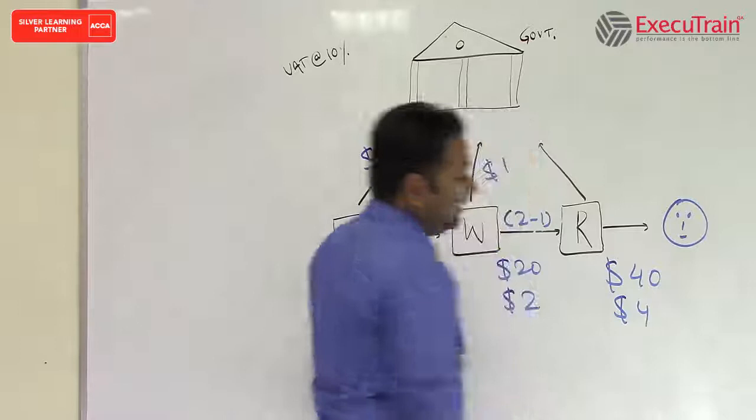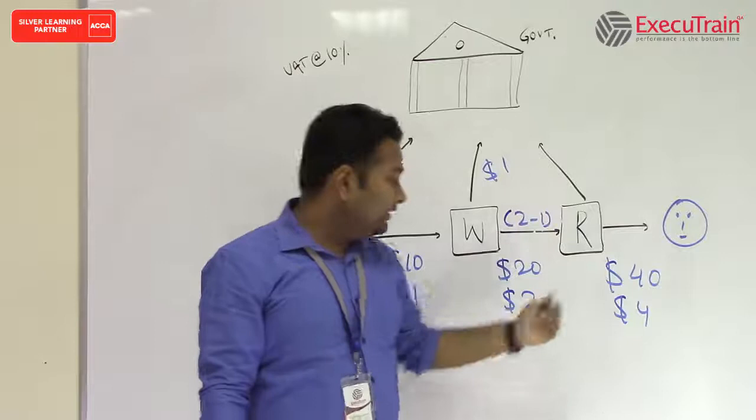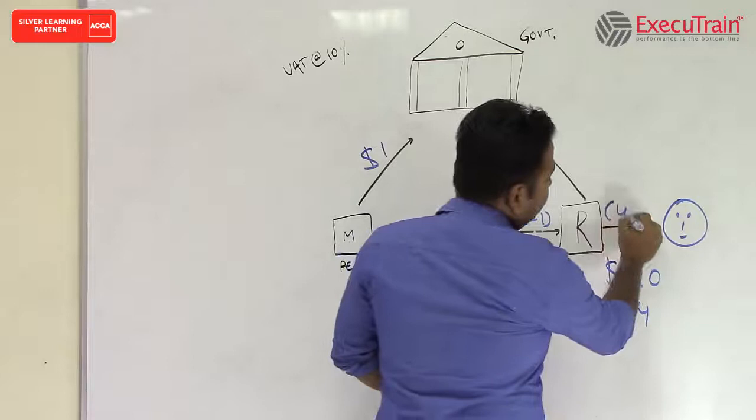So again the same concept we will apply. Out of the $4 which this guy needs to pay to the government, he has already paid $2 at the time of purchase. So now he has to pay $4 minus $2, which is equal to $2.